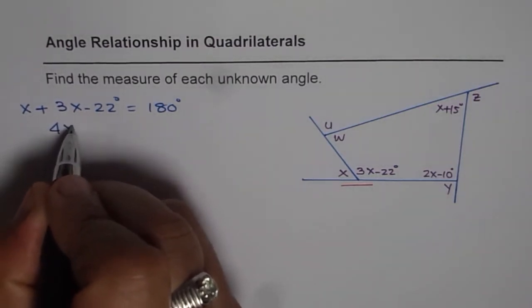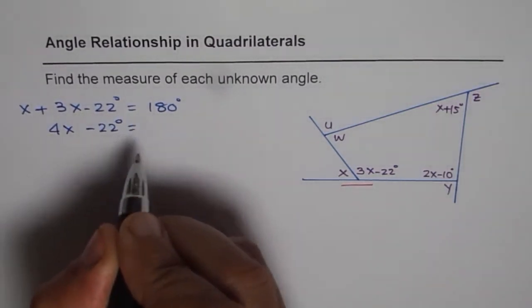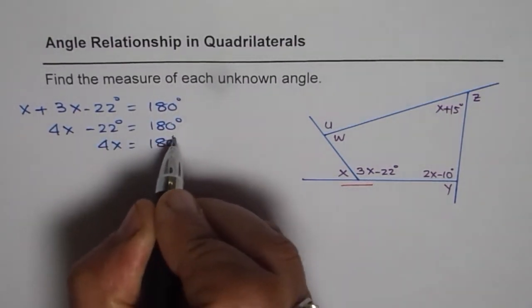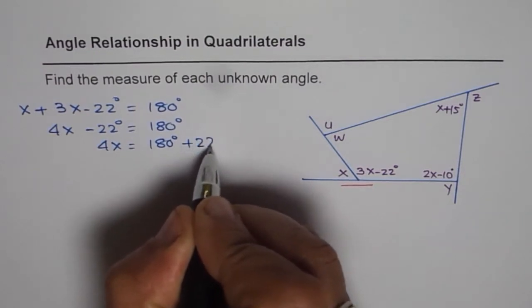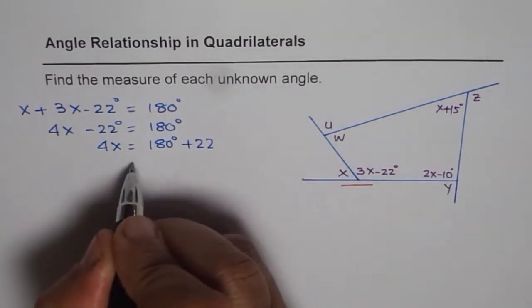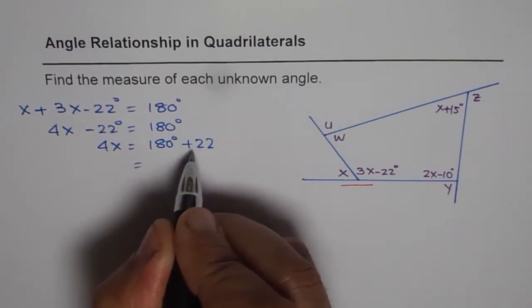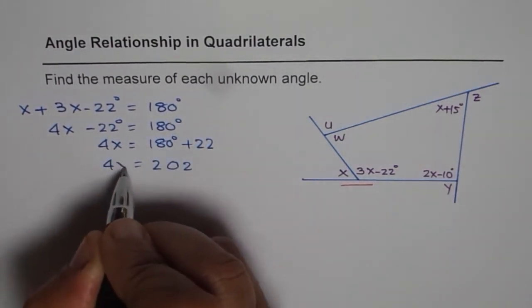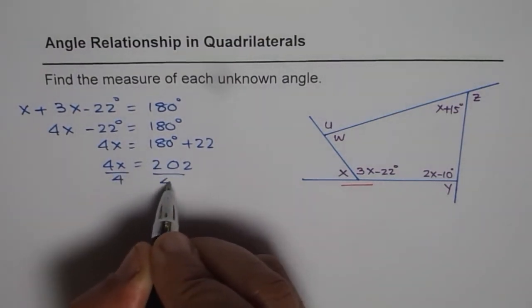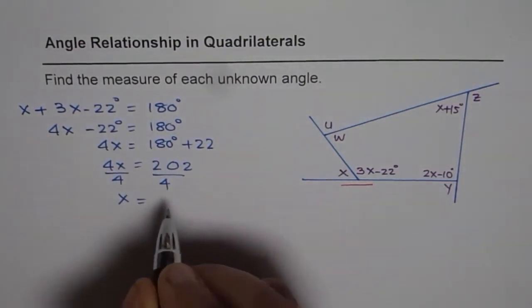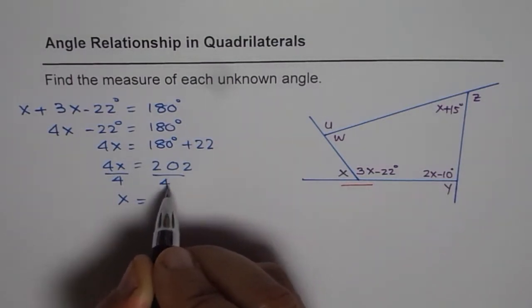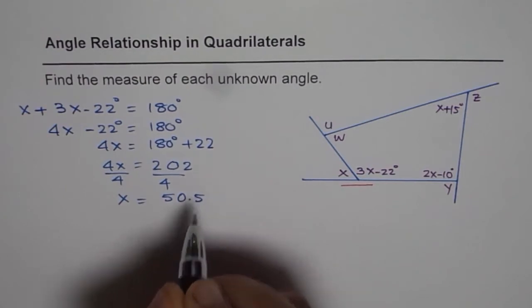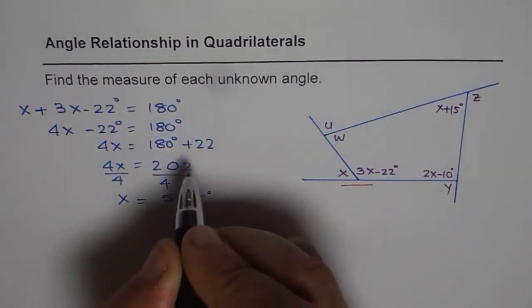So from here we can say 4x minus 22 degrees is equal to 180 degrees or 4x is equal to 180 degrees plus 22, which is indeed equals to 202. 202 is 4x, so we can divide by 4 and get the value of x.